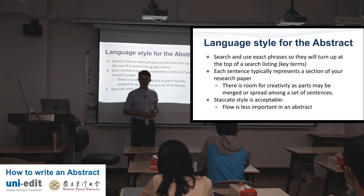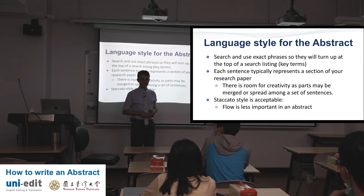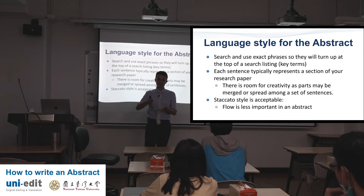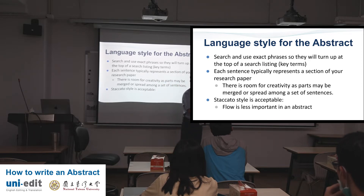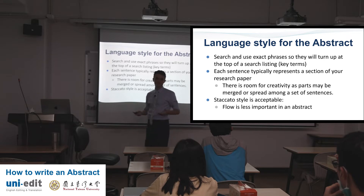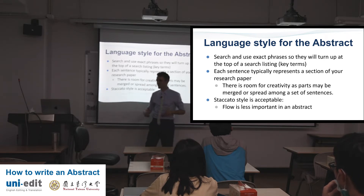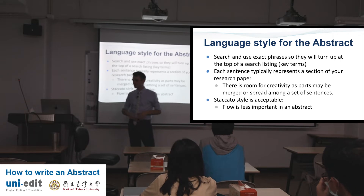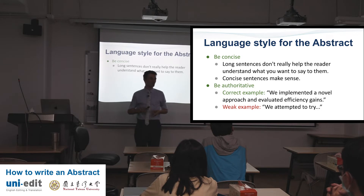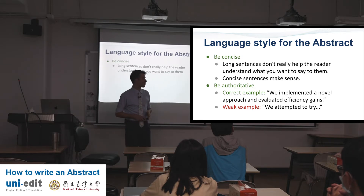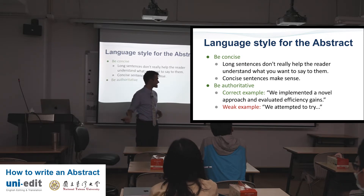Staccato is like choppy. You don't need a lot of transition words in your abstract — therefore, furthermore — those help with flow, but in an abstract that's less important because it can be very short. Your abstract is short, so those are a waste of words. Flow is less important in an abstract. Be concise — long sentences don't really help the reader understand what you want to say. Short, concise sentences make sense.